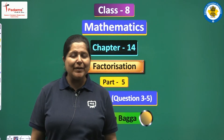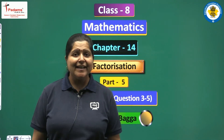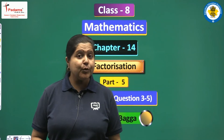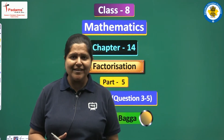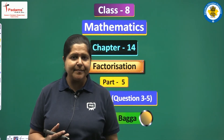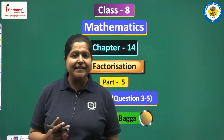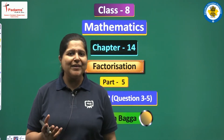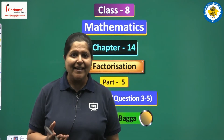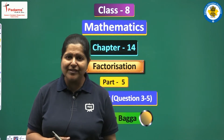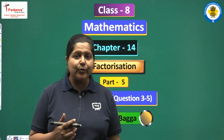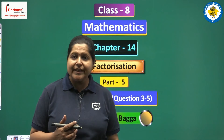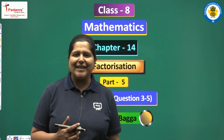Namaskar children, this is Poonam Bagga welcoming you to your maths class. We are studying Chapter 14 Factorization from Class 8 maths. We now know all three methods of factorization: common factors, regrouping of terms, and using algebraic identities. We have also completed the first two questions from Exercise 14.2. Today we will complete this exercise by taking up the remaining questions, questions 3 to 5.